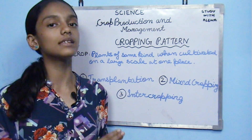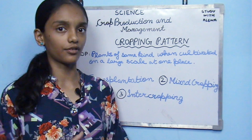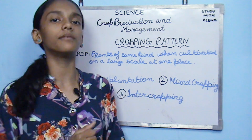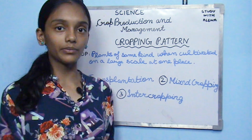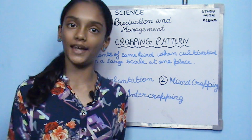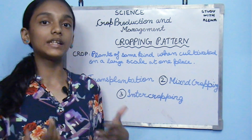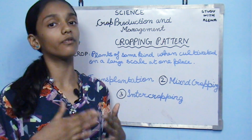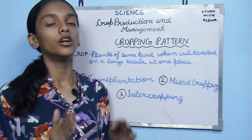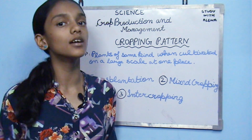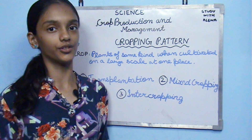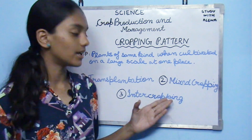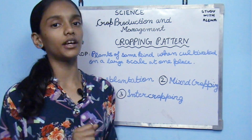The first cropping pattern is transplantation. In this method, seeds are first grown in nurseries in small pots. When the seed grows into a small plant — a sapling or seedling — it is shifted from the nursery to the field where it is further grown. An advantage is that you can choose the healthiest plants and discard any unhealthy ones.